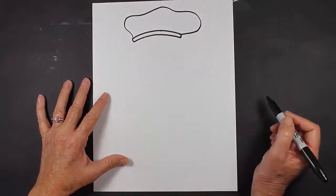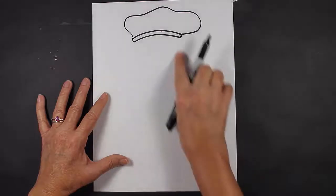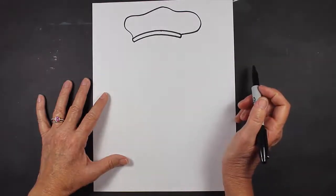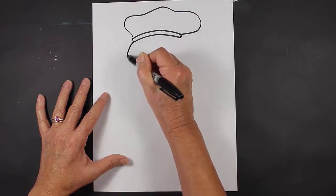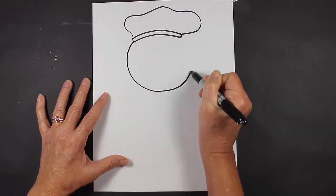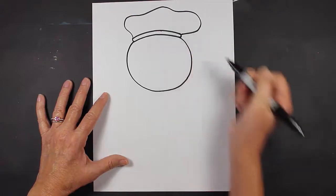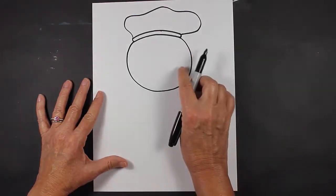Underneath here, we're going to make our scarecrow's face. We're going to make a nice round face that looks like this. If yours is not as round as this, that's okay, just do the best that you can.